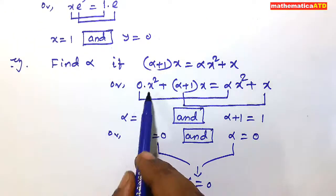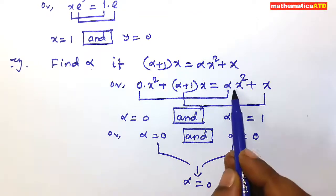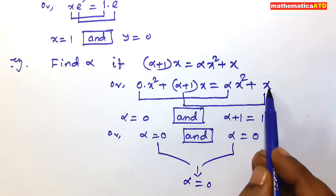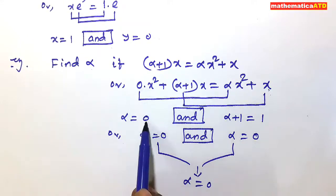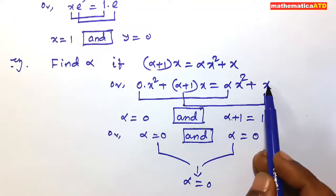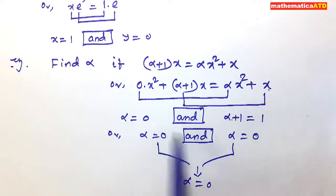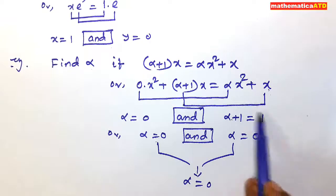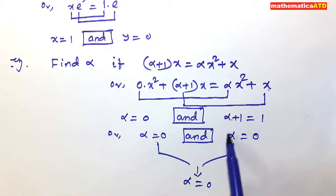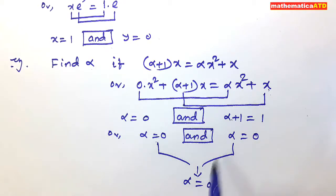To repeat: 0·x squared plus (alpha plus 1)·x equals alpha·x squared plus x. Compare the coefficient of x squared and the coefficient of x. The coefficient of x squared on the left is 0, on the right is alpha, so alpha equals 0. The coefficient of x on the left is alpha plus 1, on the right is 1, so alpha equals 0. Since the conjunction is 'and', take the common of both solutions. The common solution is alpha equals 0.